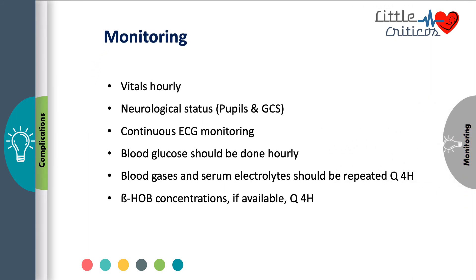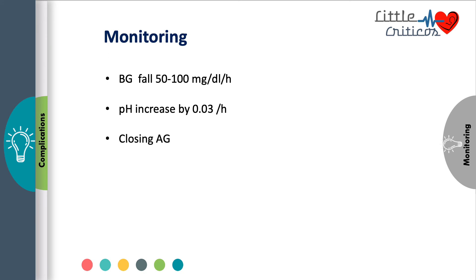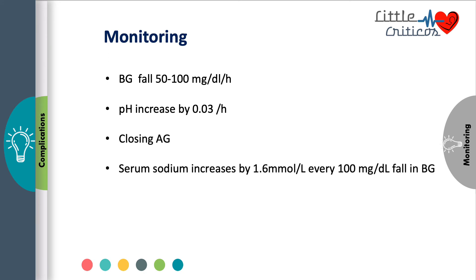DKA requires stringent monitoring in an intensive care setting. Vitals must be taken hourly; neurological status including pupils and GCS must be documented every 2 hours. Continuous ECG monitoring is required. Blood glucose should be checked hourly; blood gases and serum electrolytes repeated 4-hourly; beta-hydroxybutyrate, if available, done 4-hourly. In a child recovering from DKA, expect blood glucose to drop 50 to 100 mg per deciliter per hour, pH to increase by 0.03 per hour, the anion gap to close, and corrected sodium to show least variability, with a gradual rate of fall of serum osmolality.